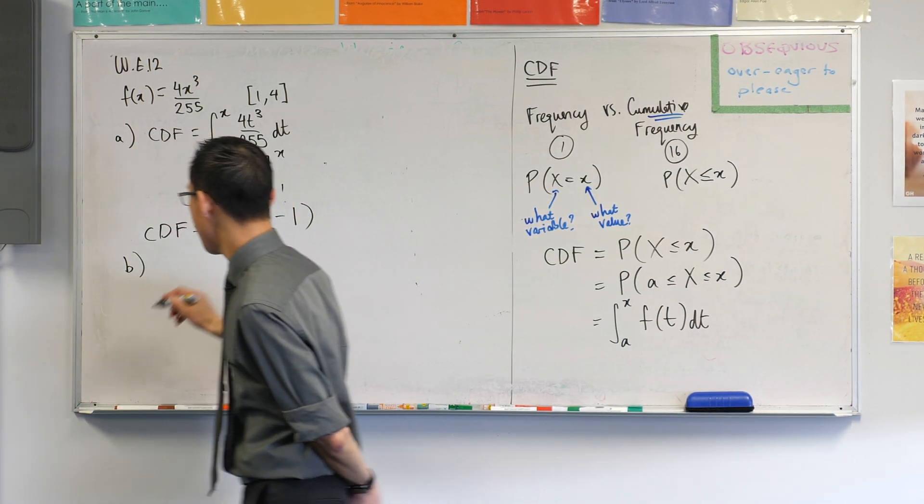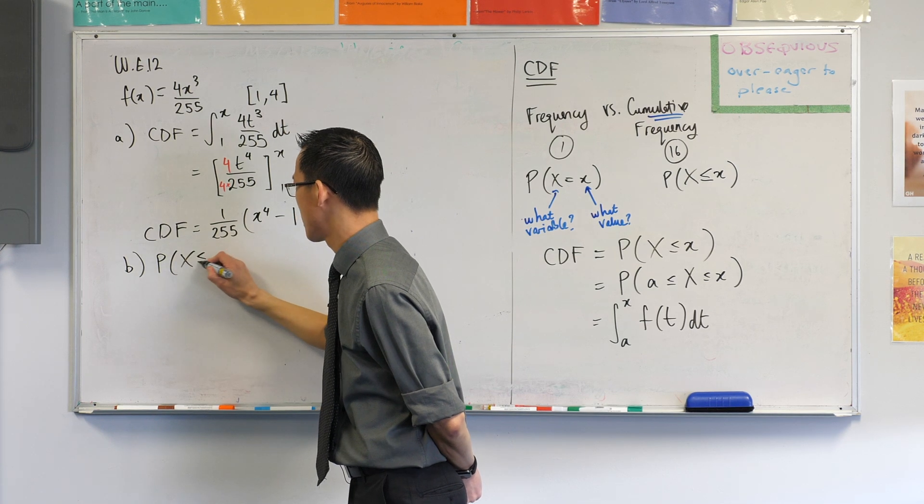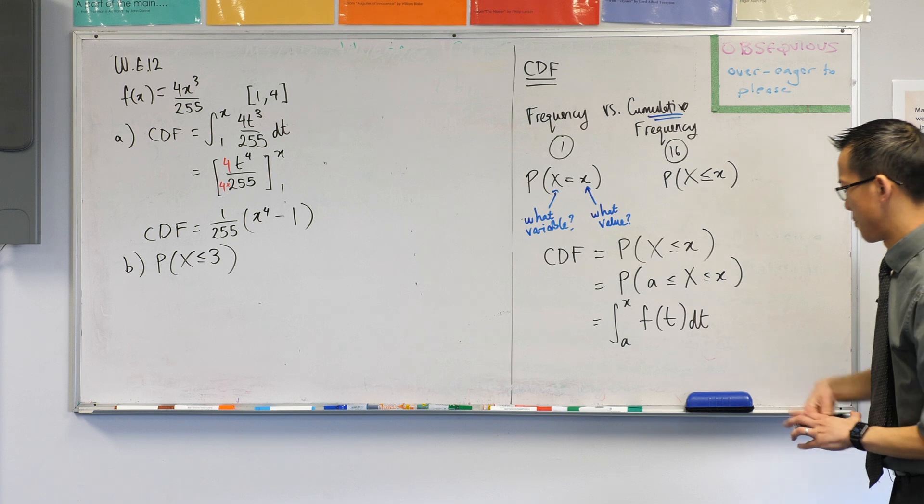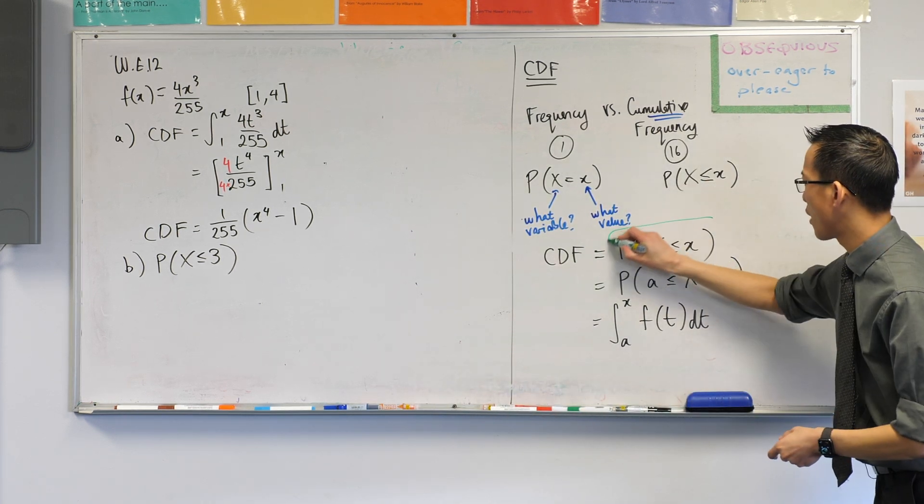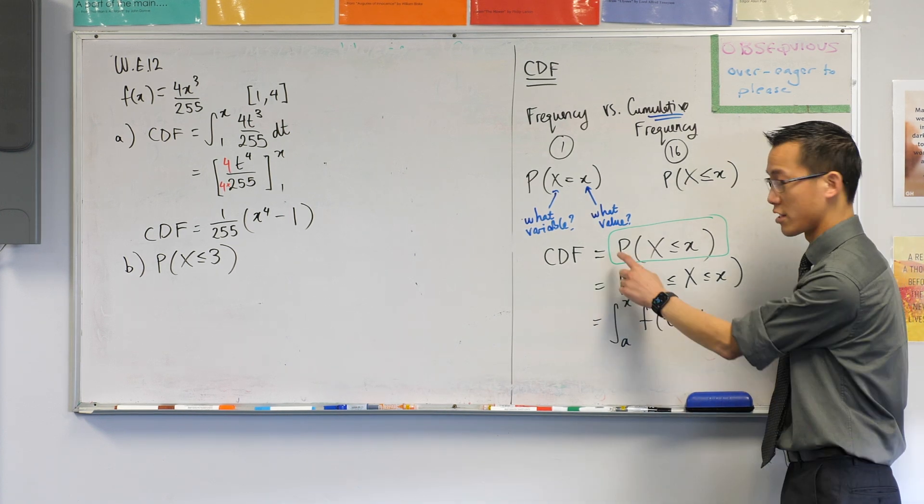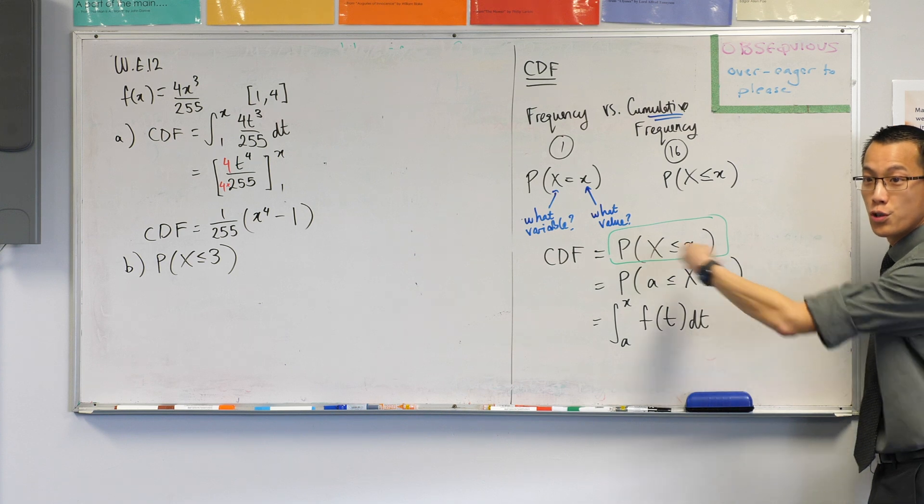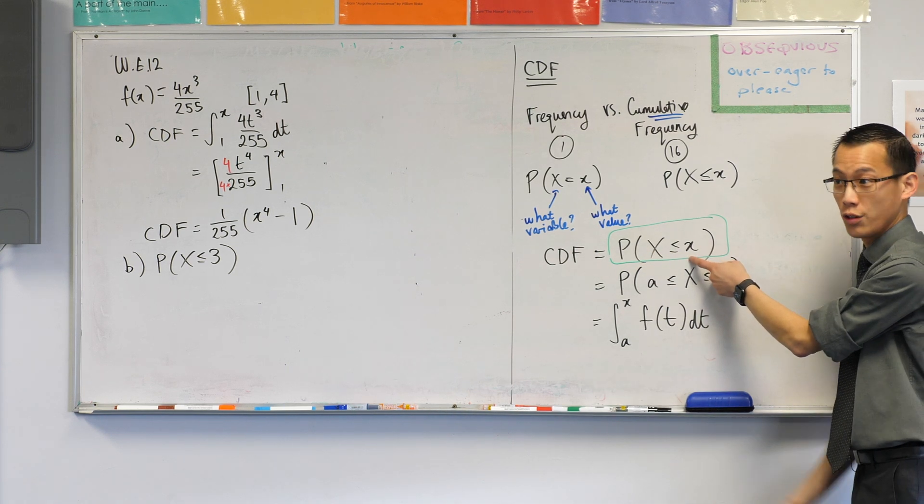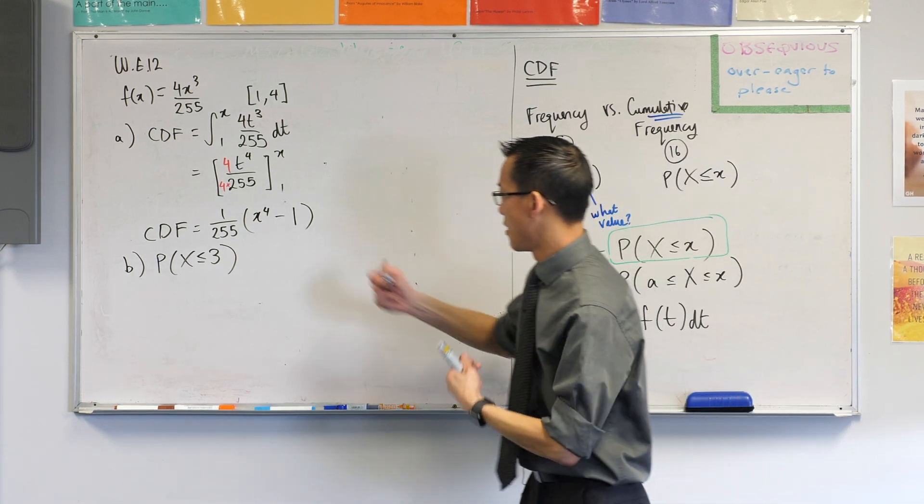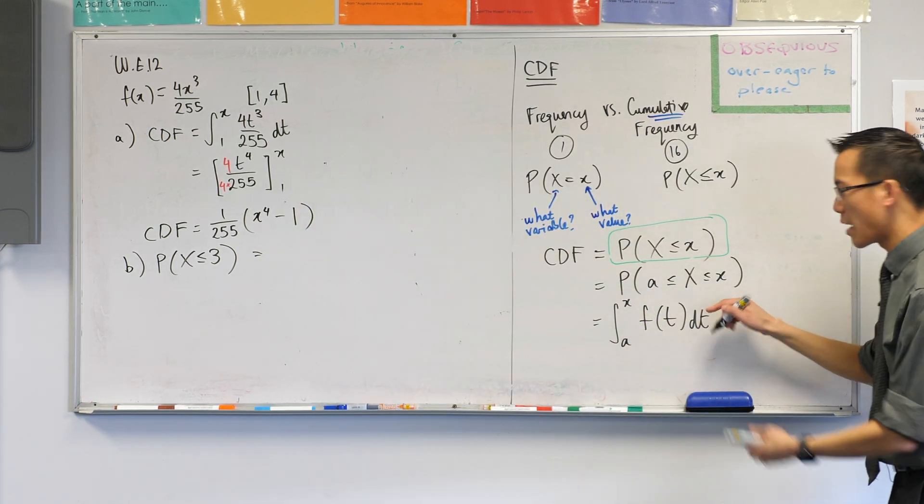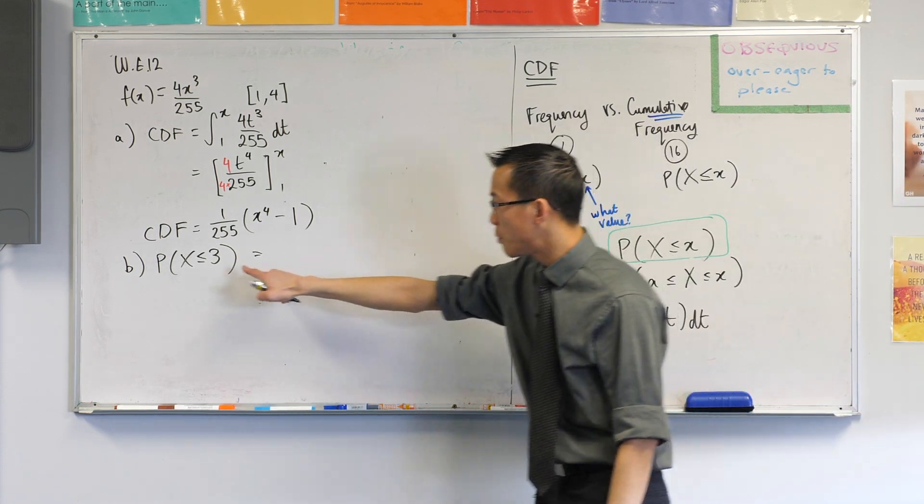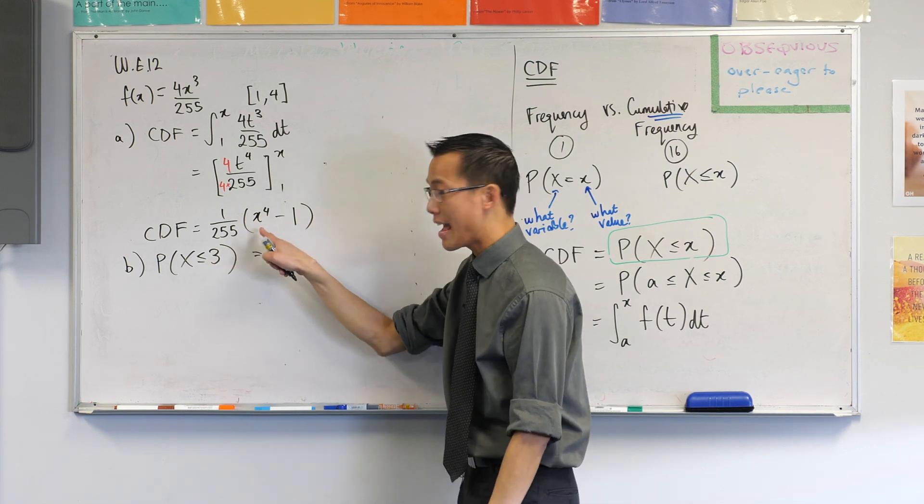Use the CDF to find p of x is less than or equal to 3. Come over here with me and have a look at how we defined the cumulative distribution function. It's the probability of whatever up to including your particular value, which in this one is 3. Very good. So I'm going to say, this is going to go from 1 to 3, but I've kind of already done this stuff. Do you see that? You guys did all the integration. So I'm just going to put 3 into the x.